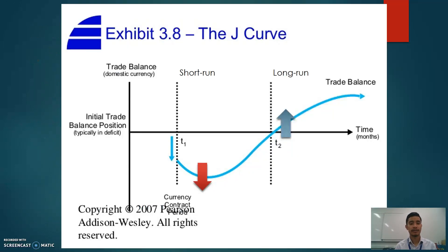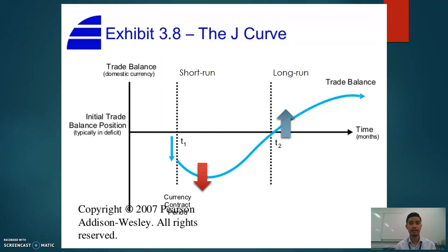This is where the discussion of the J-curve fits in. In the short run, represented by the red arrow in the middle of the graph, the trade balance — shown by the blue curvy line — declines initially. But in the long run, the trade balance picks up as volumes of exports increase and volumes of imports decrease, all in response to a depreciation in the Aussie dollar. So when discussing the impact of the Australian dollar on the trade balance, you need to consider whether you're talking about the short run or long run impact.